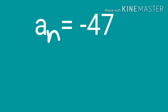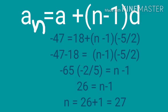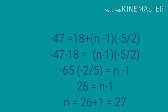AN is given as negative 47. We need to find the value of N. Writing the equation AN equal A plus N minus 1 into D, and substituting the values: negative 47 equal 18 plus N minus 1 into negative 5 by 2. Then negative 47 minus 18 equal N minus 1 into negative 5 by 2, giving negative 65 into 2 by negative 5 equal N minus 1. So 65 and 5 cancel to give 13, and negative 13 into negative 2 equals positive 26. So 26 equal N minus 1, giving N equal 27. So here 27 terms.